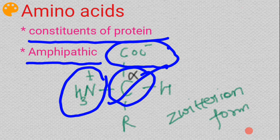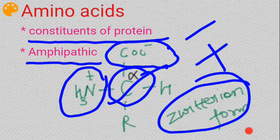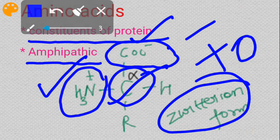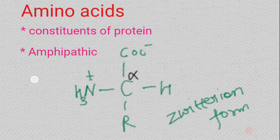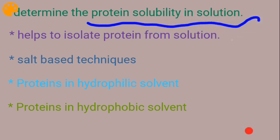Amino acids are amphipathic in nature, meaning when you dissolve amino acids into solution at different pH they will carry different types of charge — either negative or positive charge. In the case of the zwitterion form, they will carry both negative and positive charge, so the net charge on the amino acid will be zero.